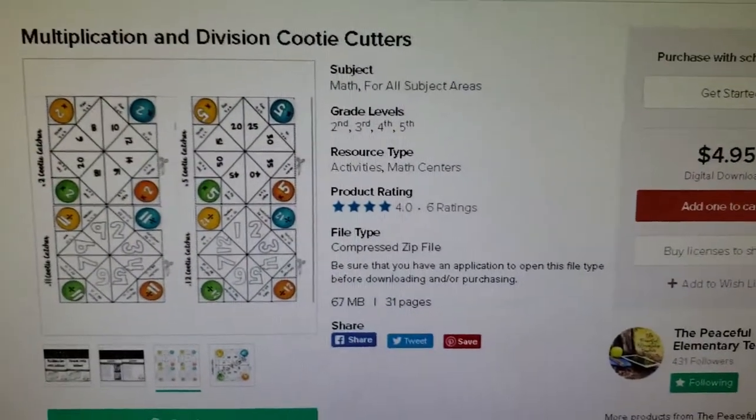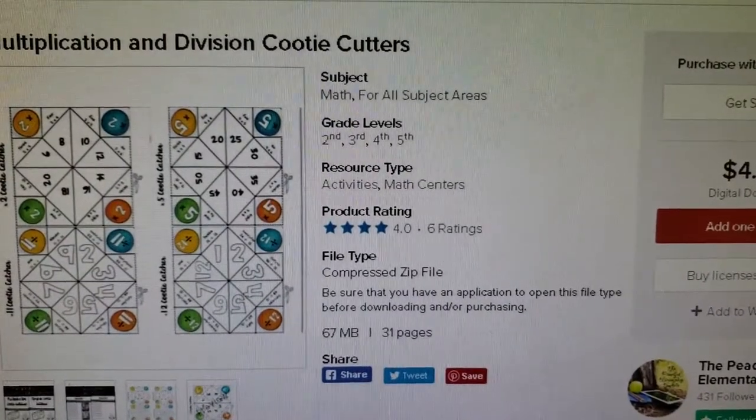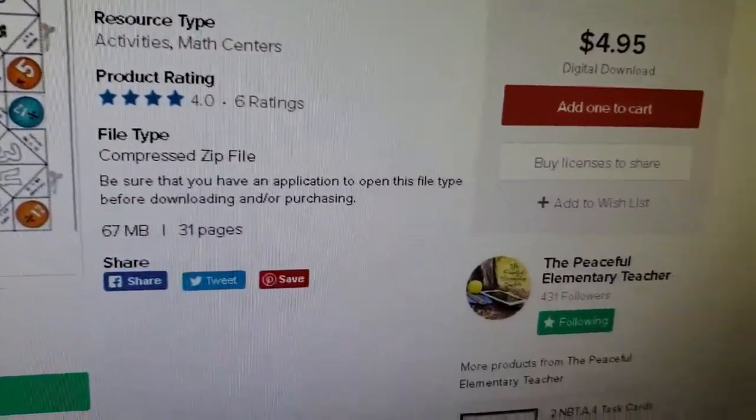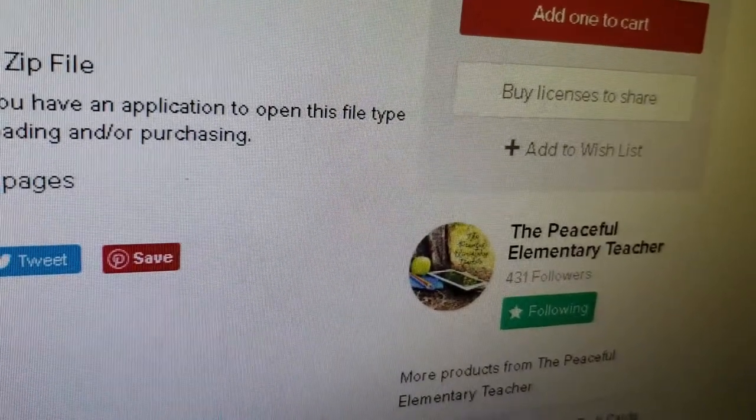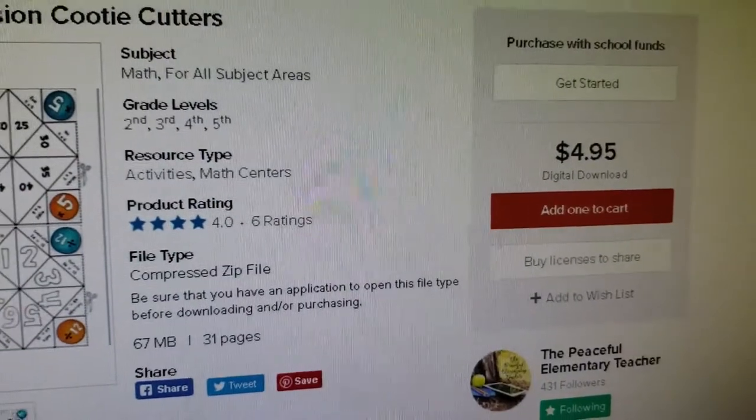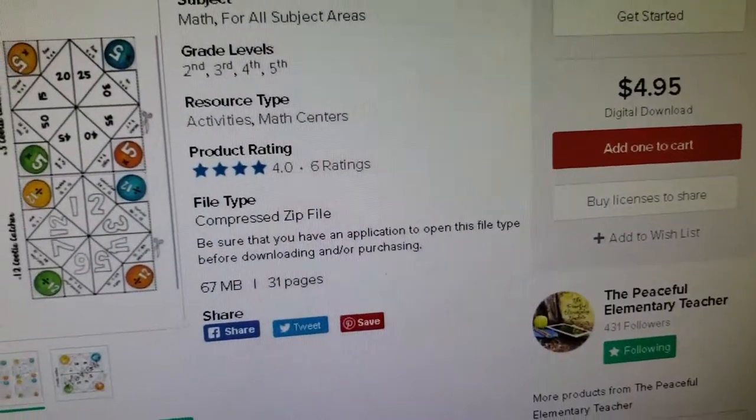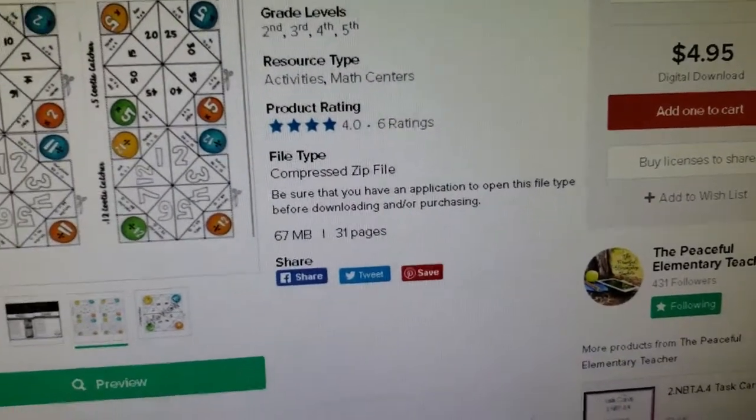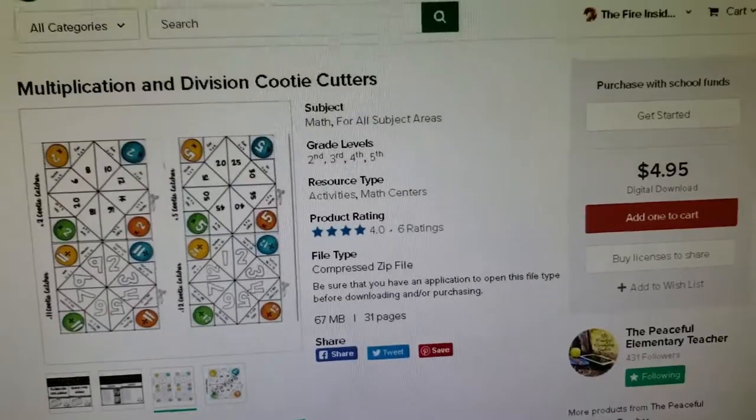The first thing I want to show you is here's the store for Multiplication and Division Cootie Catchers. This is for elementary school level. This is done by The Peaceful Elementary Teacher on Teachers Pay Teachers. Give them a shout out. This lesson is $4.95. You're going to get a lot of stuff - this is 31 pages and it's a zip file.